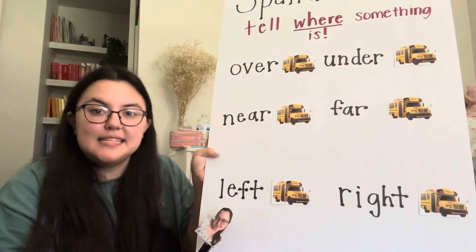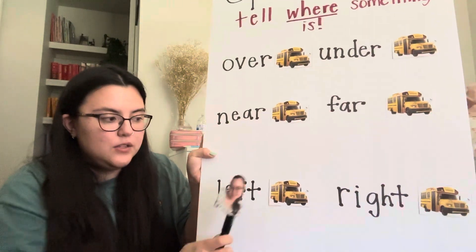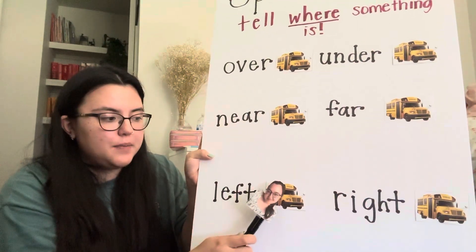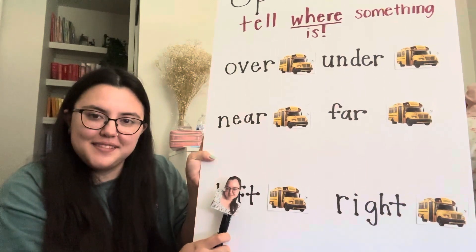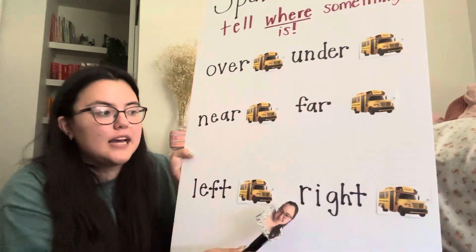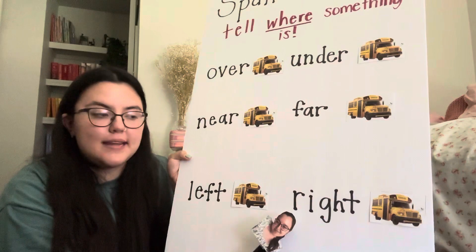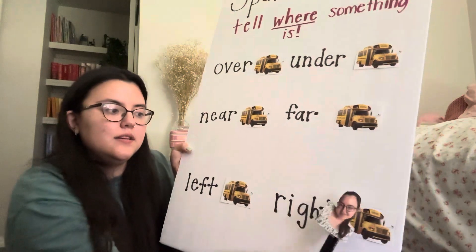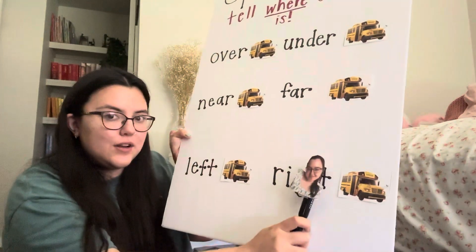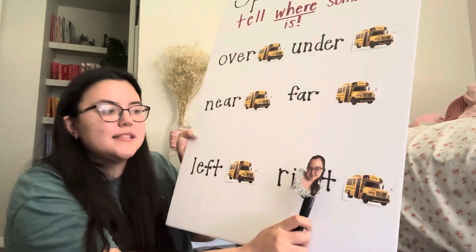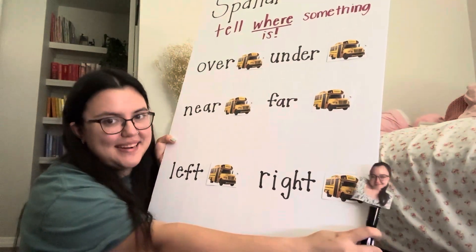The next word is left — here is a school bus, and Miss Allie would be on the left. The last word we are talking about is right. So I am not over here on the left — Miss Allie would be over here on the right.